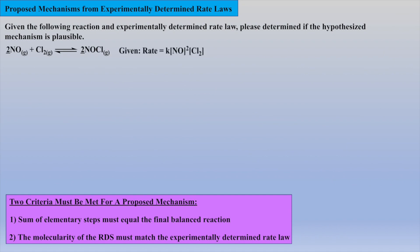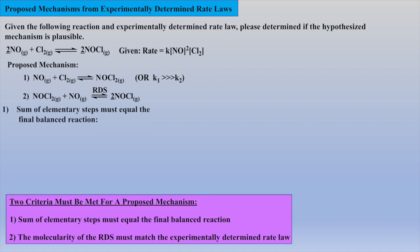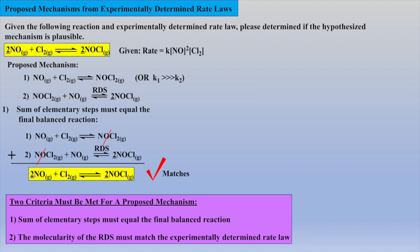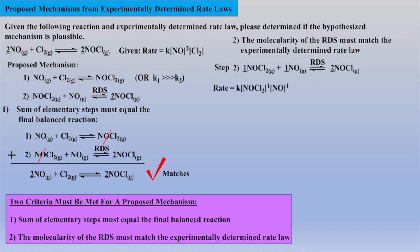In this example reaction, we are given a previously experimentally determined rate law. A mechanism has been hypothesized, and we are asked if this mechanism is plausible. Let's check if the sum of both elementary reactions equals the final balanced reaction. Canceling the intermediate NOCl2 before adding the proposed elementary reactions — the sum does match the stoichiometry of the given reaction. The rate constant for step 1 is much greater than the rate constant for step 2; thus, step 2 is the RDS. Writing the rate law from the molecularity of the RDS gives first order with respect to NOCl2 and first order with respect to NO.